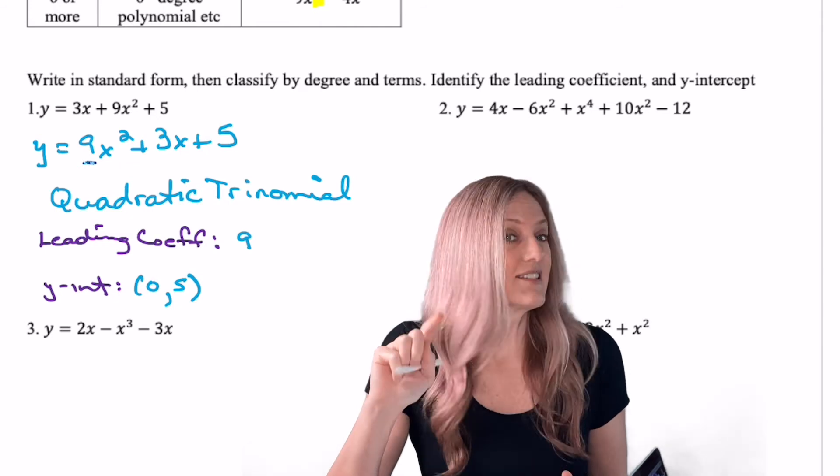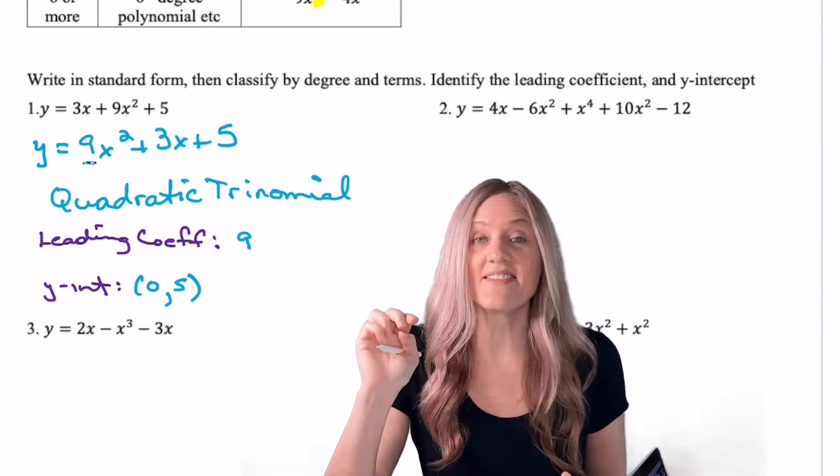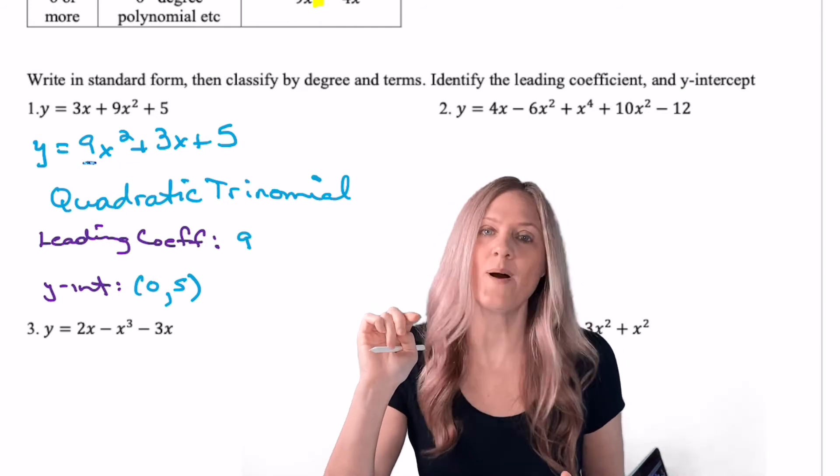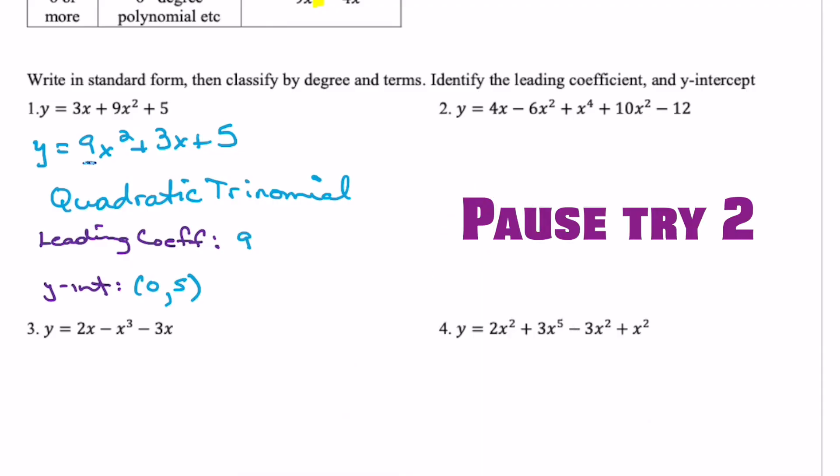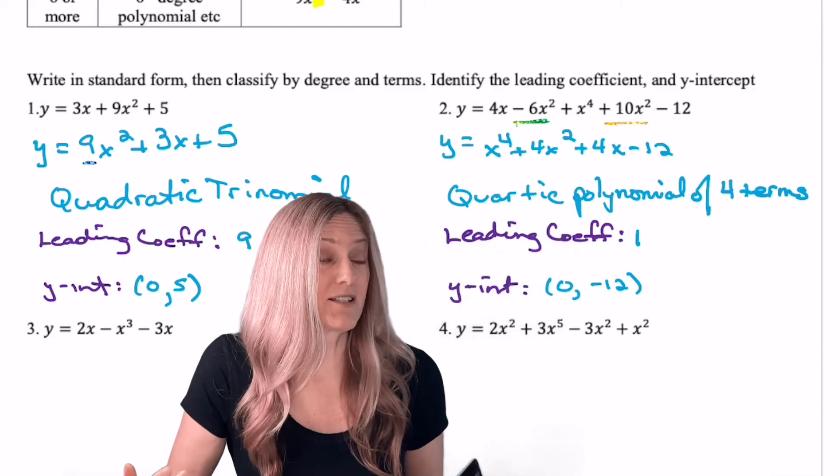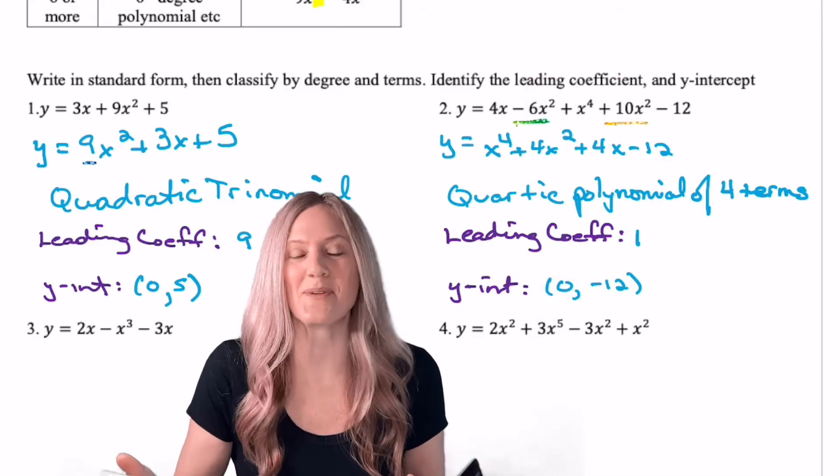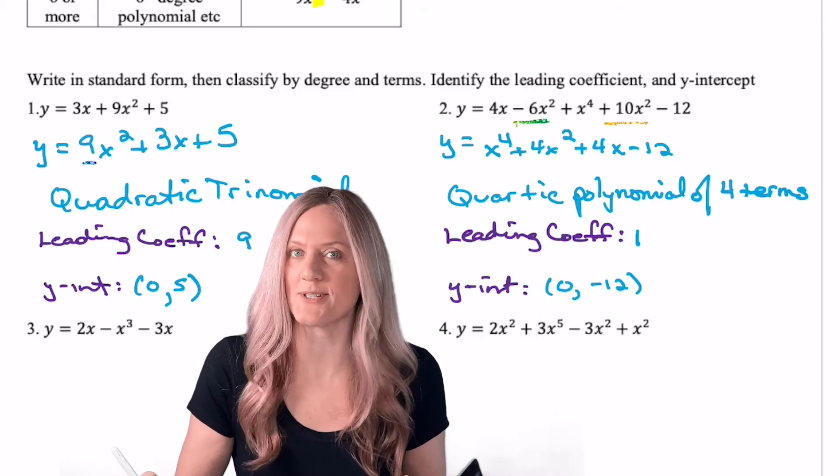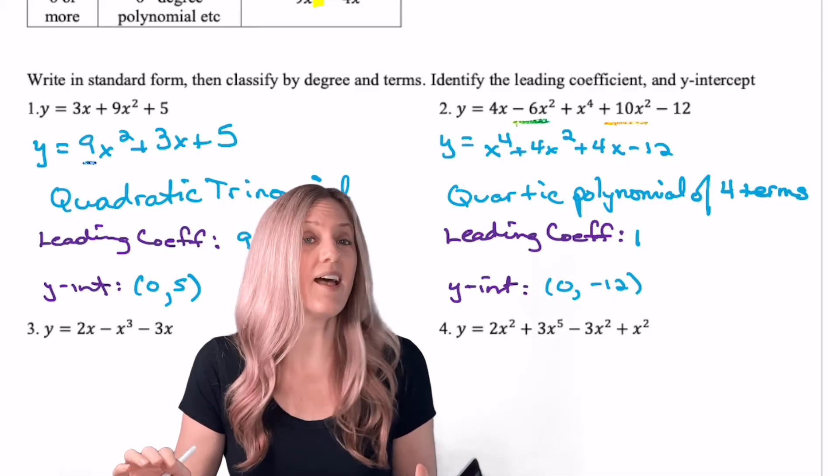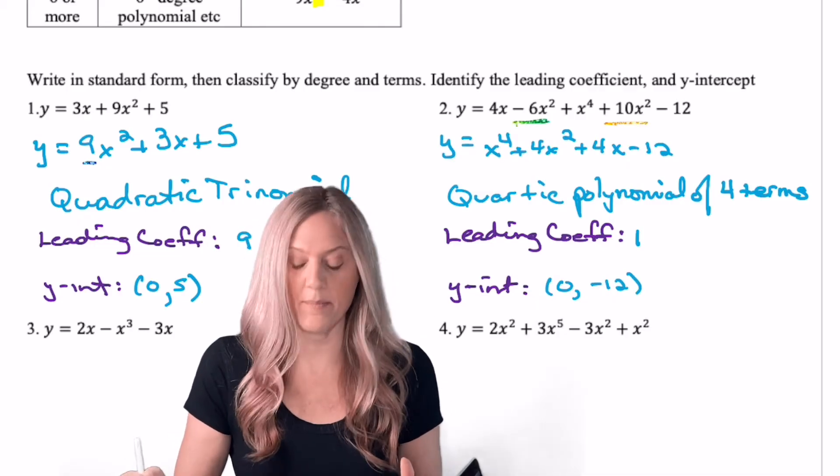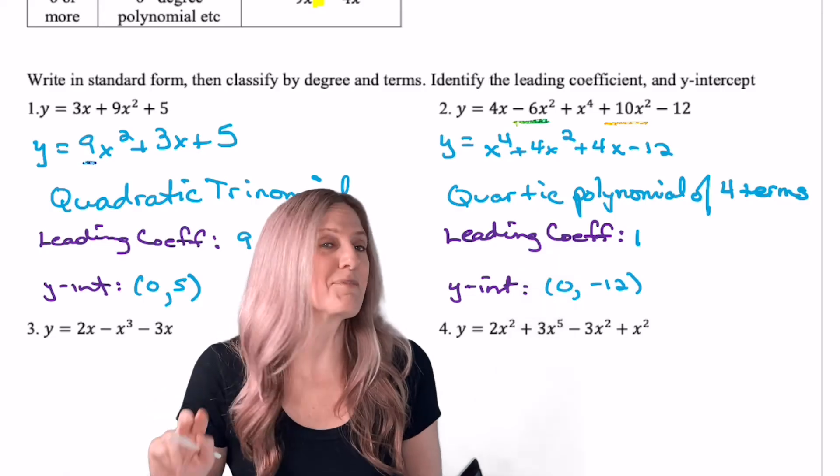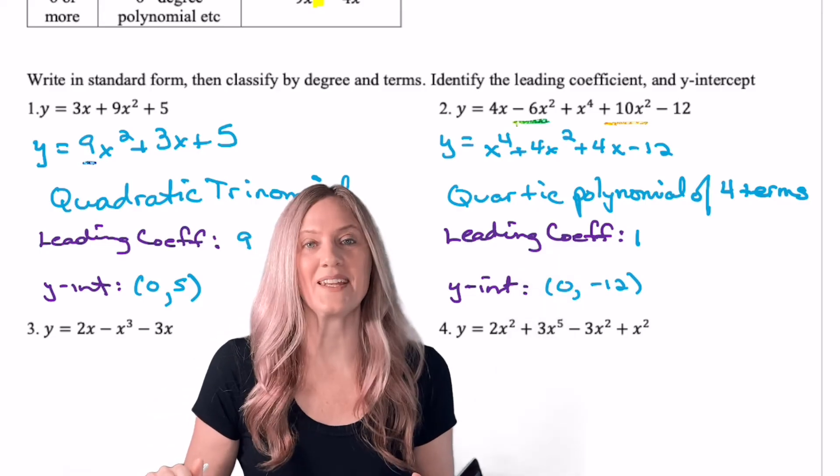Number two, go for it. Standard form, classify, then identify leading coefficient and y-intercept. I almost forgot to combine like terms - hope you didn't. Once I did, my standard form polynomial is a quartic polynomial of four terms. Leading coefficient of 1 and y-intercept (0, -12). Number three and number four - Miss Ryan will come in and check answers with you.